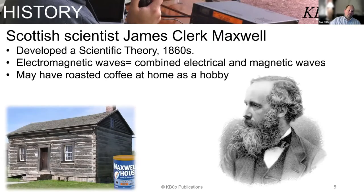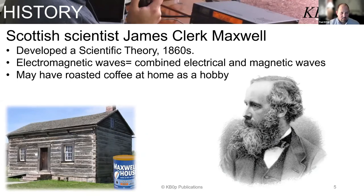So a little bit of history. Scottish scientist James Clerk Maxwell developed a scientific theory in the 1860s which related to electromagnetic waves. He defined electromagnetic waves as a combination of electrical waves and magnetic waves, and that's what we're going to talk about here.